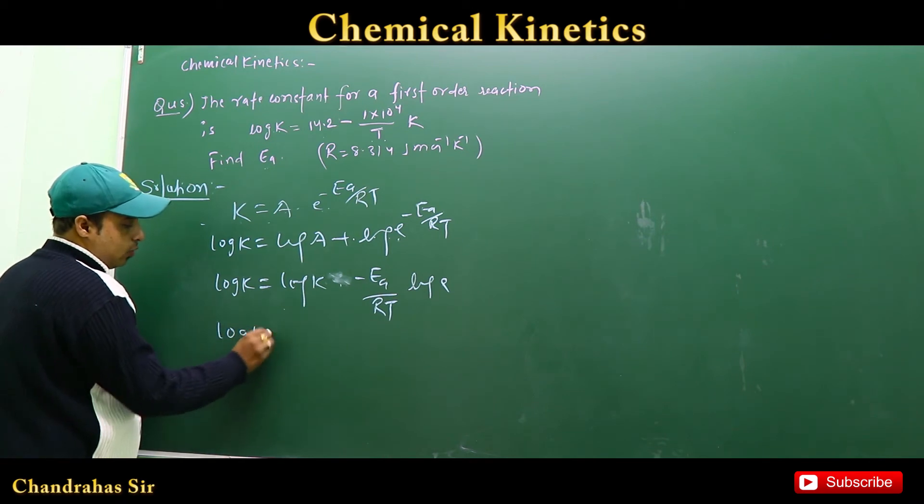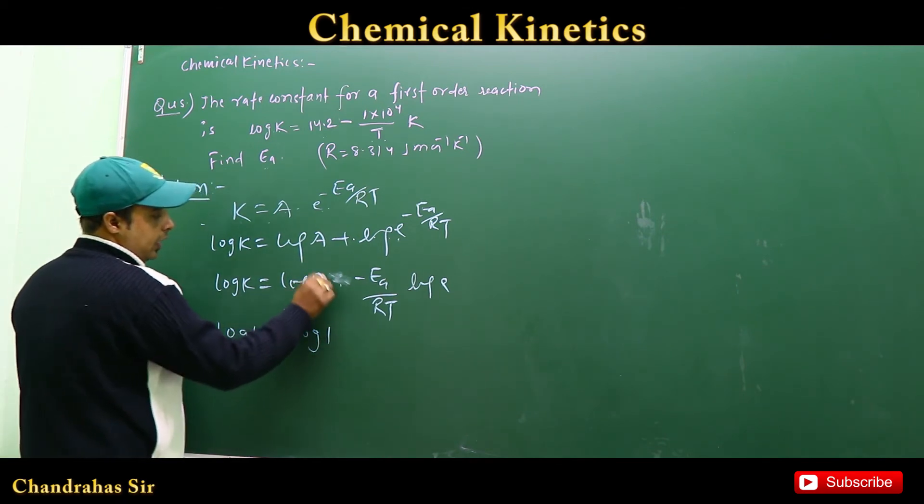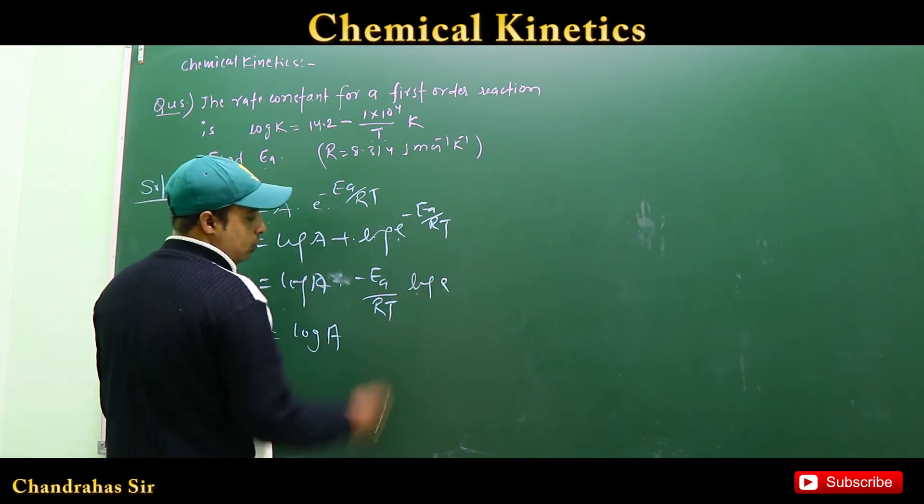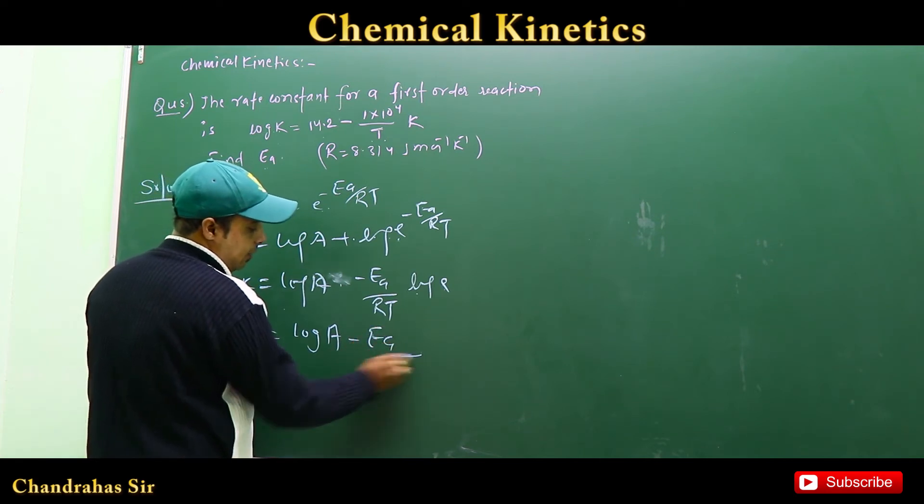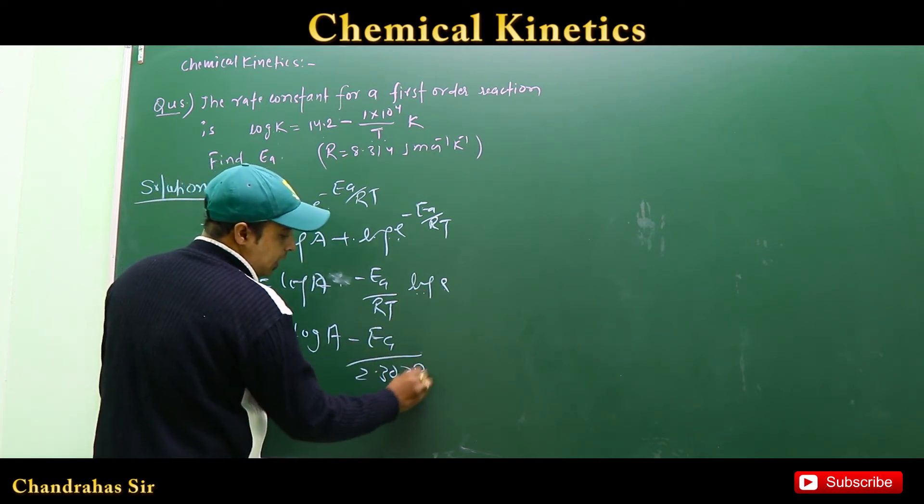So log K equals log A, and the log E value is 1 upon 2.303. Therefore, we get log K equals log A minus Ea upon 2.303 RT.